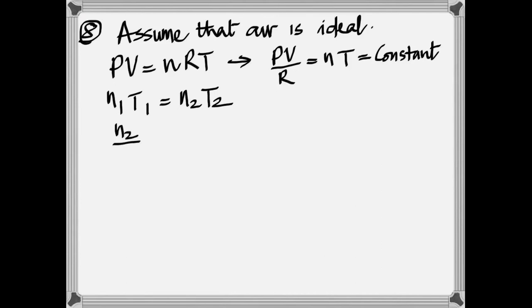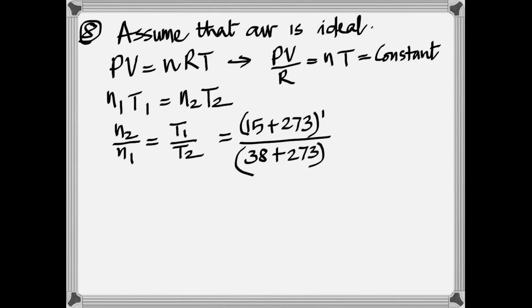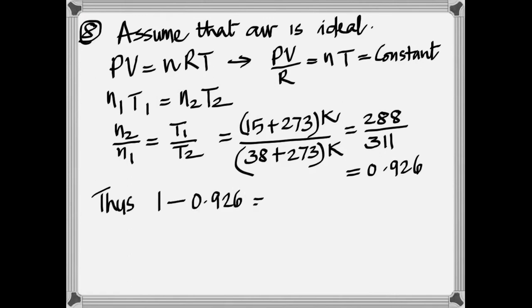So the right-hand side, N times T is constant. Therefore, N1 T1 is equal to N2 T2. Got to have the temperature in Kelvin all the time. So N2 by N1 is 0.926, and if we start with an initial number of moles of 1, then you see that the difference is 7.4%.